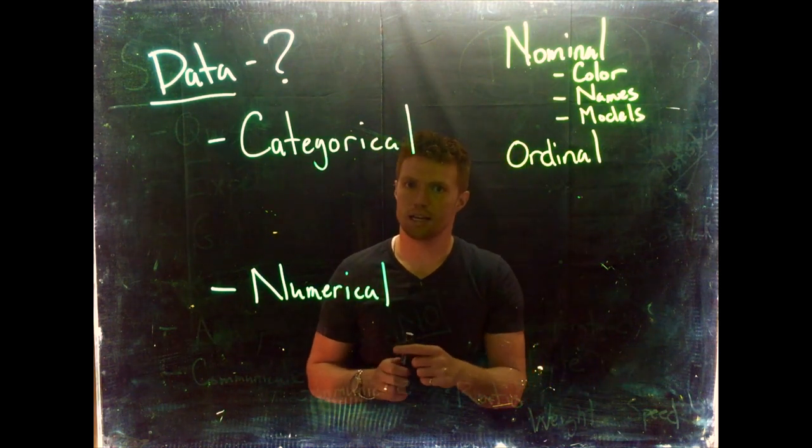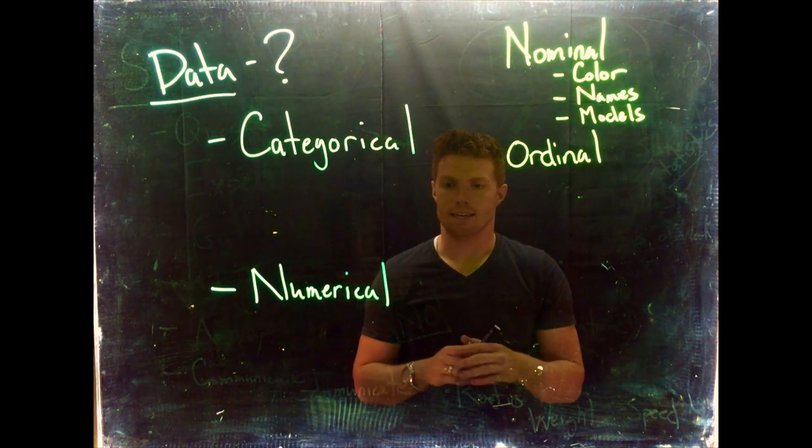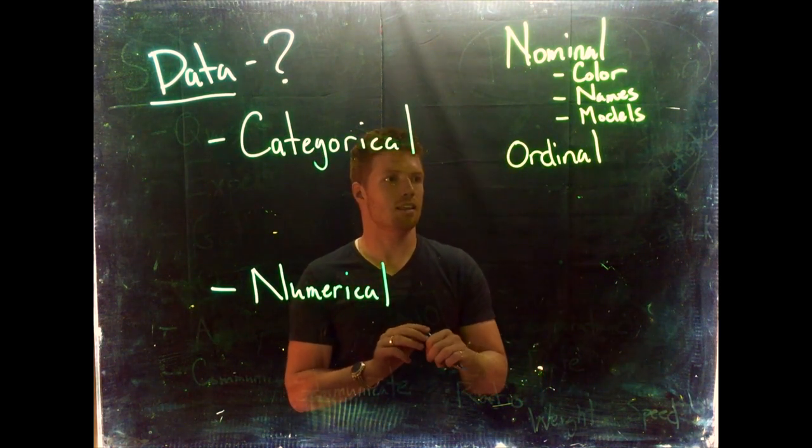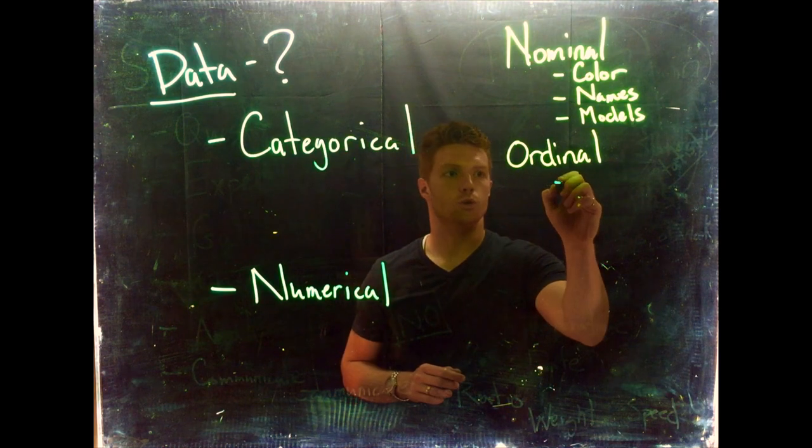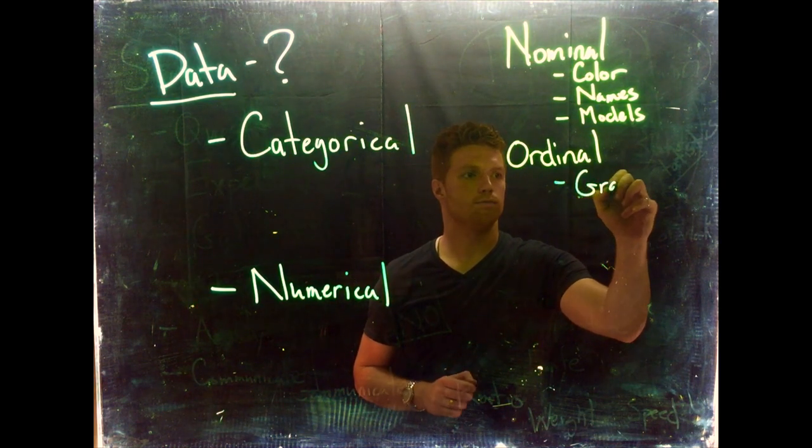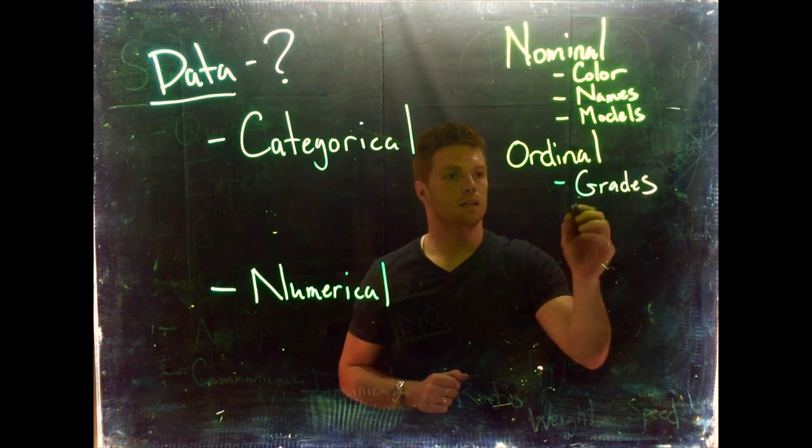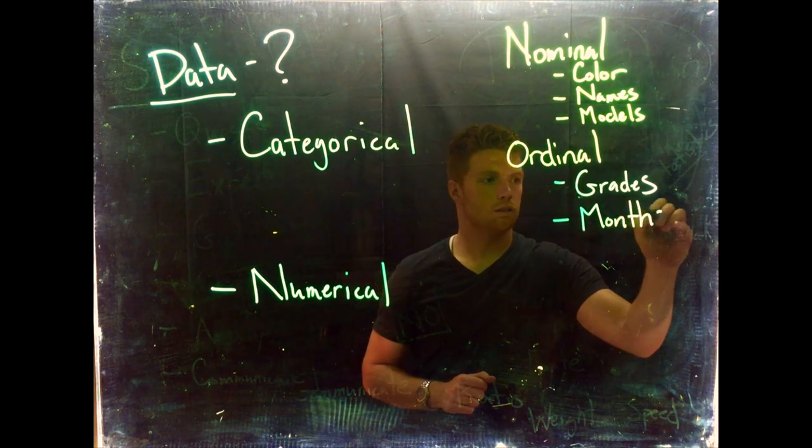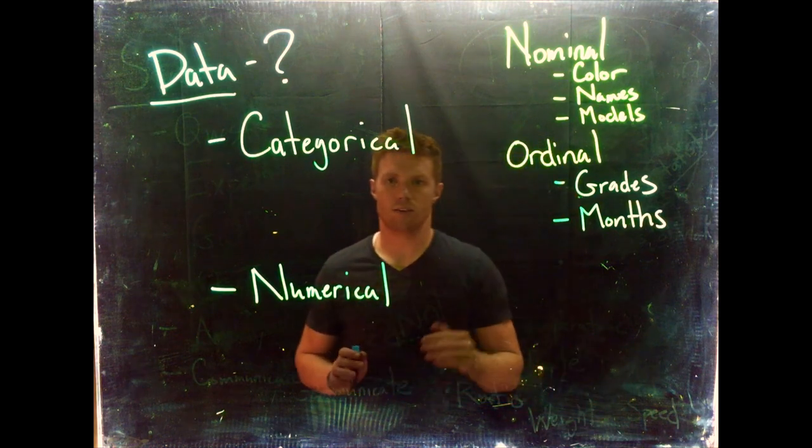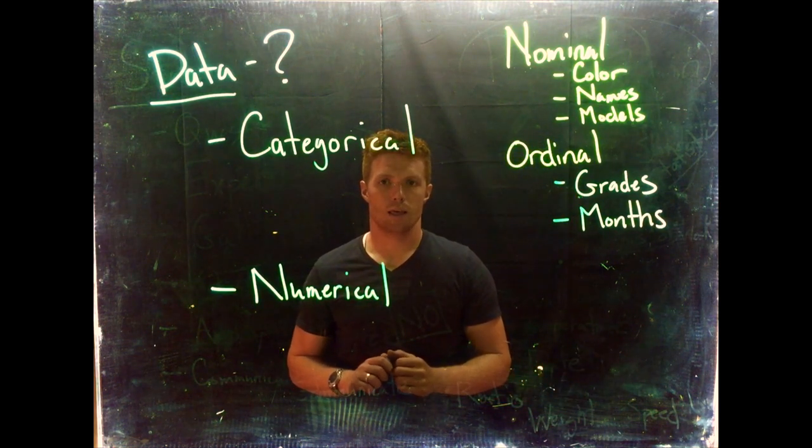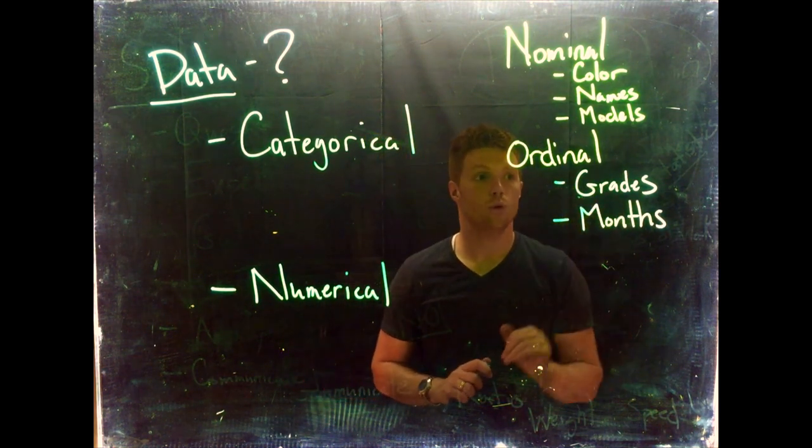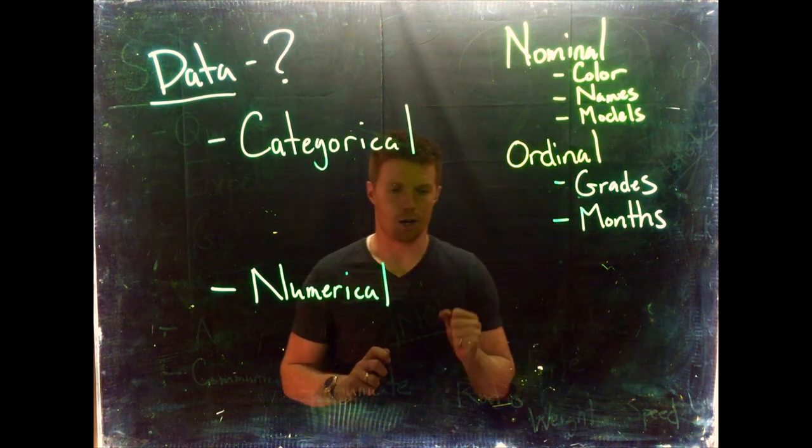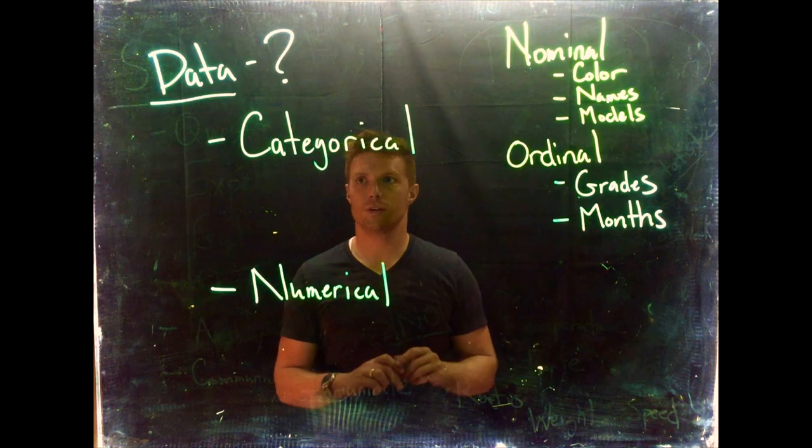Now ordinal is a little different. It's categorical data that actually has a set order, and things like this we can do grades, we could do months. So these are things that have a natural order to them that we're going to put them in, but they don't necessarily have a fixed measurement.